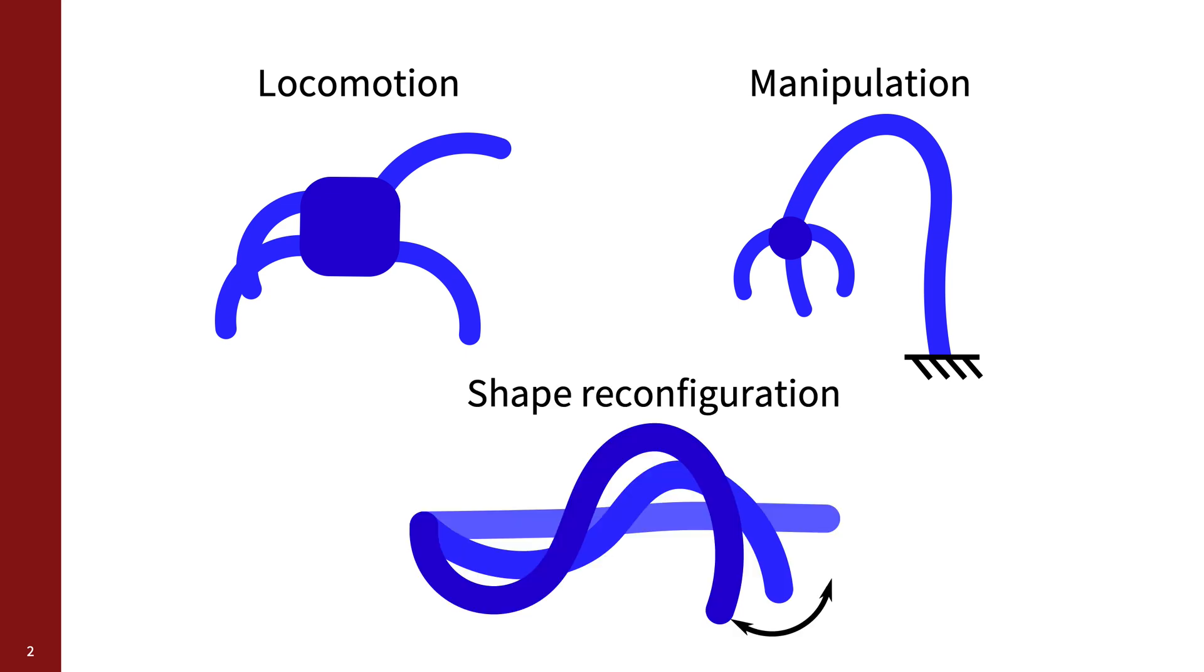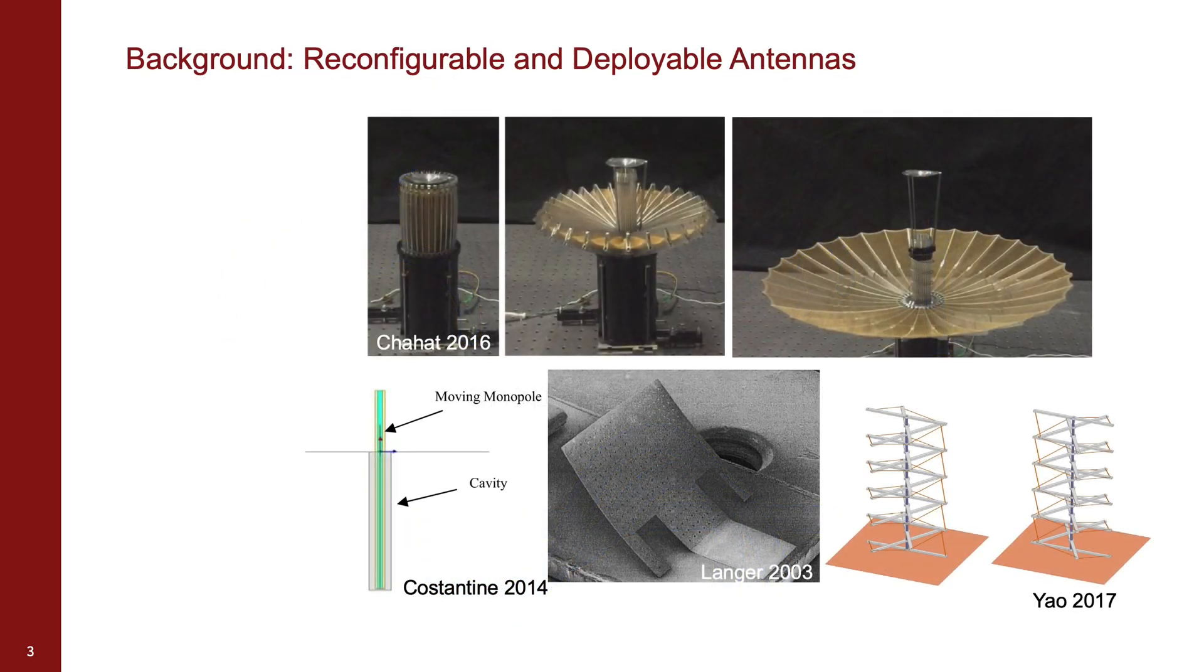However, there are many applications where the compliance of soft robots could also be used to create functional shape reconfiguration. One such application is in the development of reconfigurable and deployable antennas. Electromagnetic devices like radio antennas are 3D systems whose properties depend on their geometries.